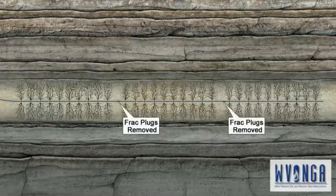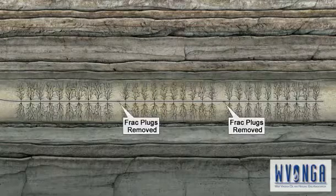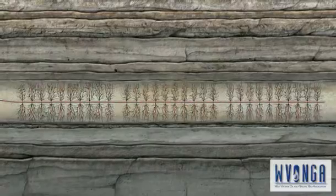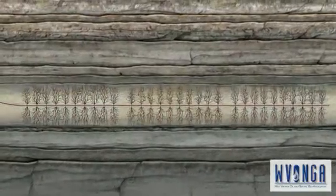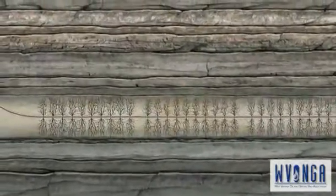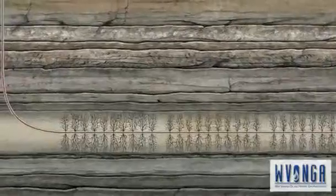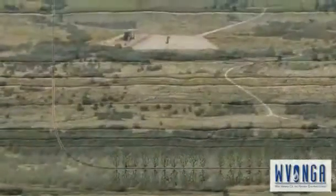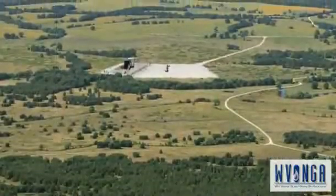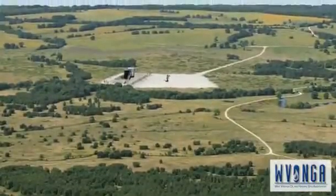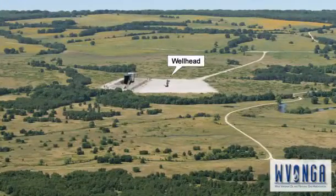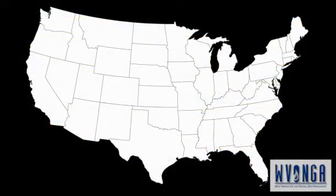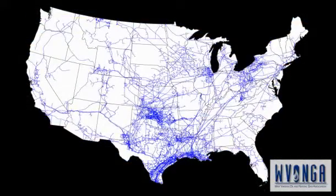Once fracking is completed, the plugs are drilled out, allowing the gas to flow up the well bore. The next step is to install a permanent well head, also known as a Christmas tree, and other necessary surface equipment. A pipeline is then built to transport the gas to the pipeline network.